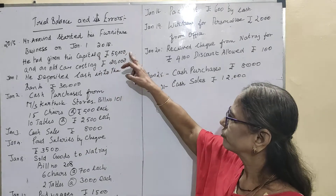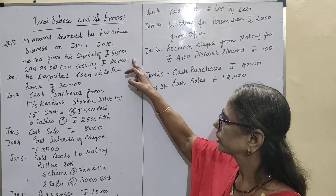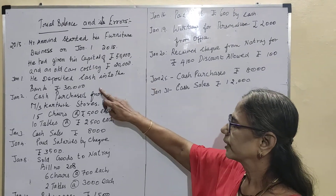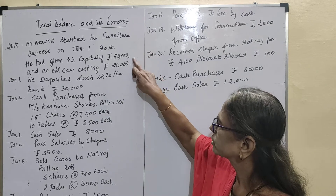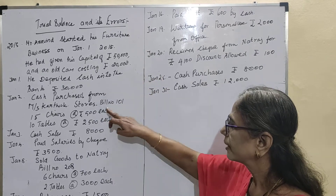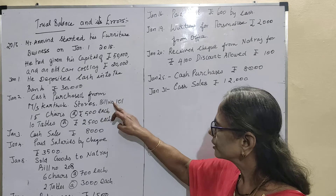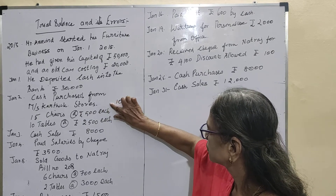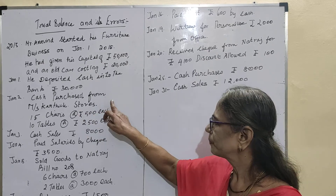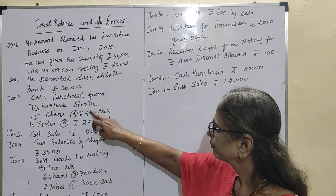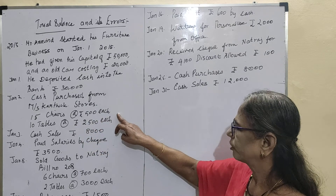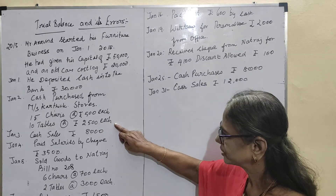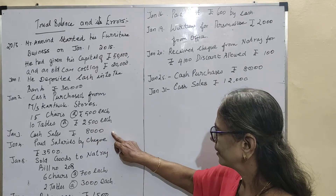Mr. Haranin started his furniture business on January 1st, 2015. He gave capital of rupees 50,000 and an old car costing rupees 20,000. He deposited 30,000 into the bank from the 50,000 cash. Cash purchases from Karthika Stores — this is a cash purchase so there will not be any bill number.